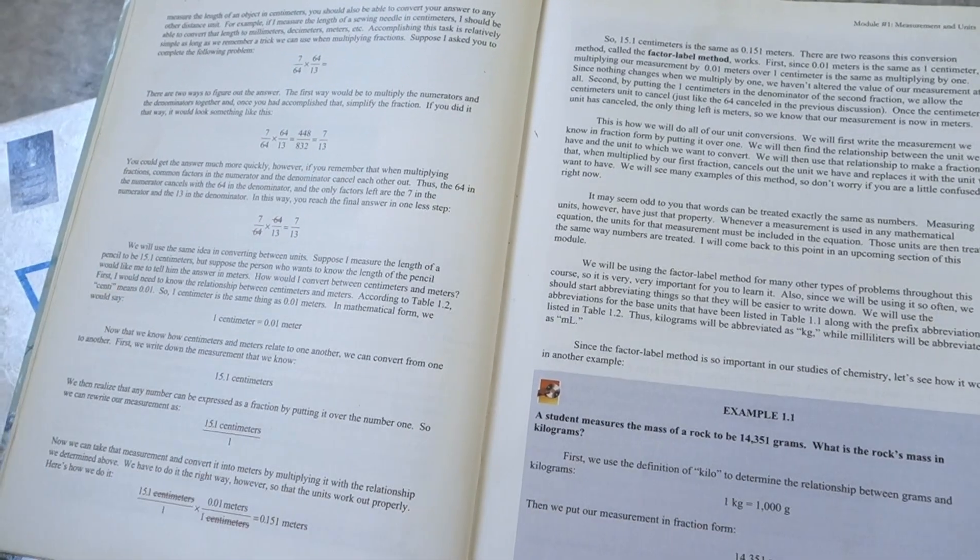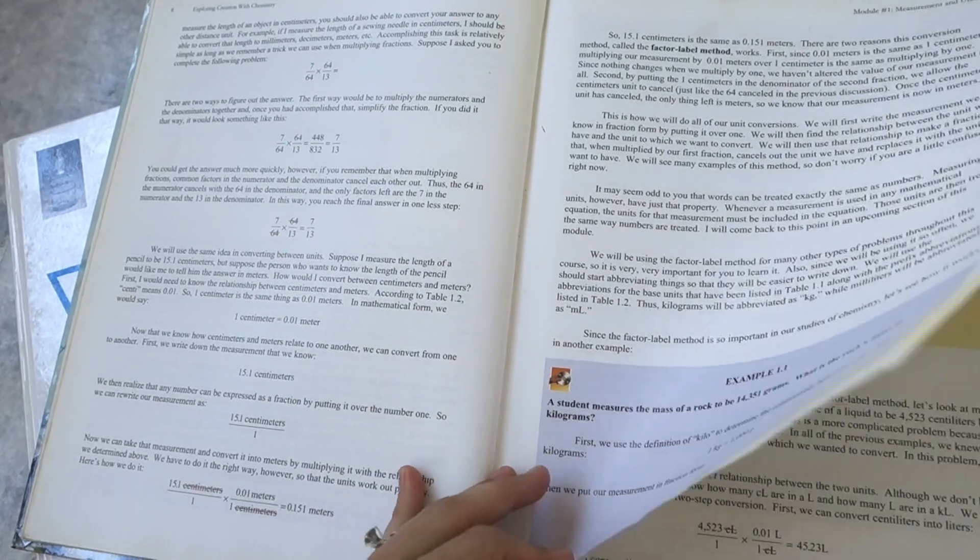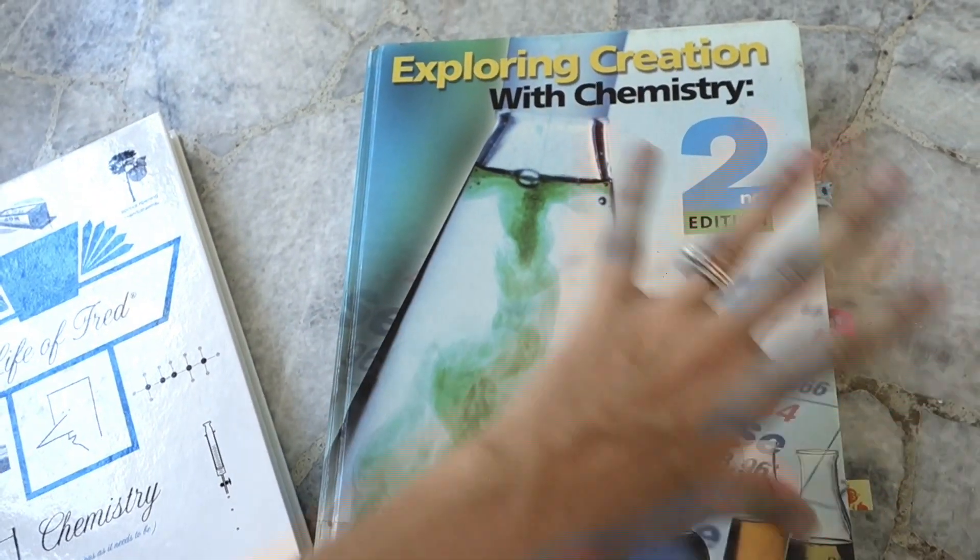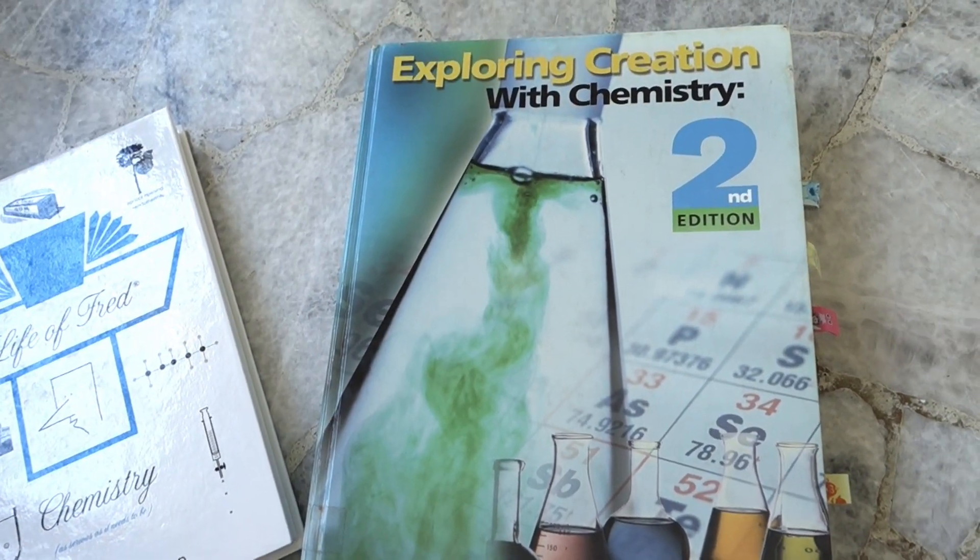Now chemistry is a very math based science. As we know, you want to be very solid in your algebra before you start chemistry. That's going to make it a lot less frustrating for you. So you can see there's on your own questions that you're doing throughout. So this course is designed to be a very normal introductory high school chemistry program.